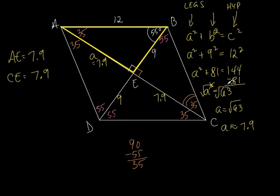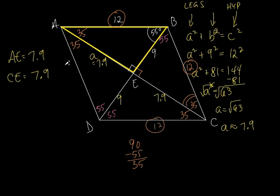If you wanted to find BC using the Pythagorean theorem, it would be 9 squared plus 7.9 squared. It should come out to approximately 12, because all four sides of a rhombus are equal — AB is 12, so BC, DC, and AD are all 12. It may not come out exactly 12 because we rounded 7.9, but it'll be very close.